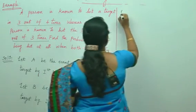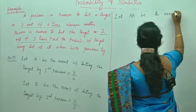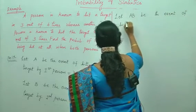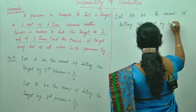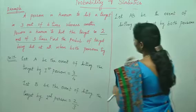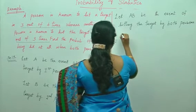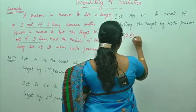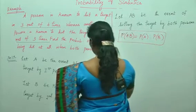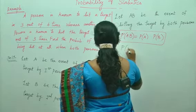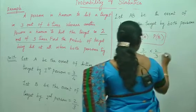Let AB be the event of hitting the target by both persons. Here we need to use the multiplication law of probability. What is the multiplication law of probability? P of AB is equals to P of A into P of B. So what is P of AB? We already know that P of A is 3 by 4 into 2 by 3 which will give you 1 by 2.